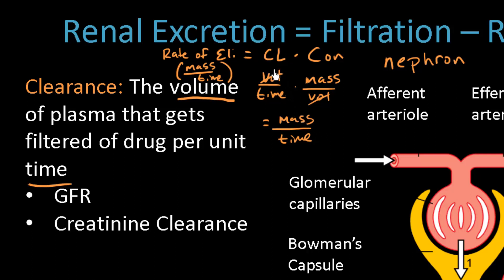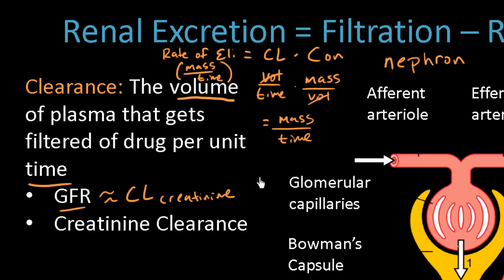Clearance is specific for elimination, whereas the analogous concept for filtration is GFR — the glomerular filtration rate. GFR is a flow rate of drug being filtered. We say that the glomerular filtration rate is approximately equal to the clearance of creatinine. Remember that creatinine is not creatine: creatine is found in muscles, and once broken down it forms creatinine. It's imperative that you understand this relationship between creatinine clearance and GFR.